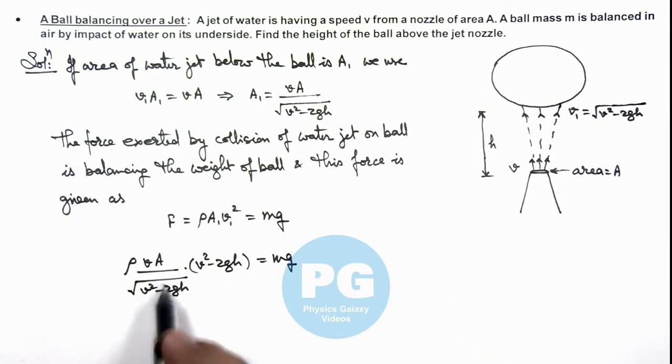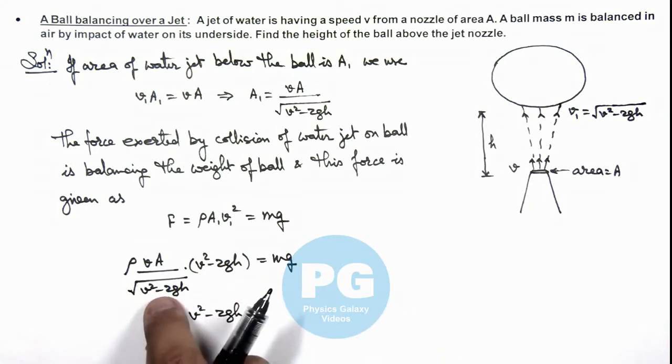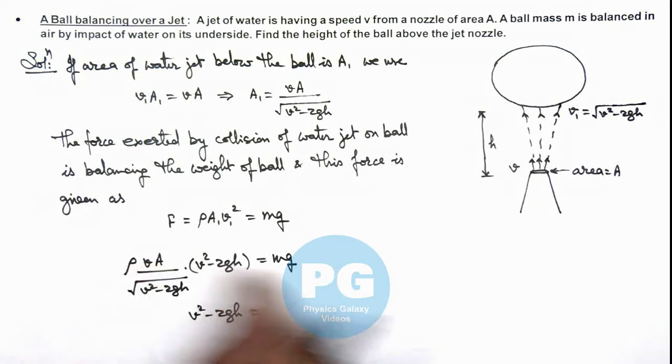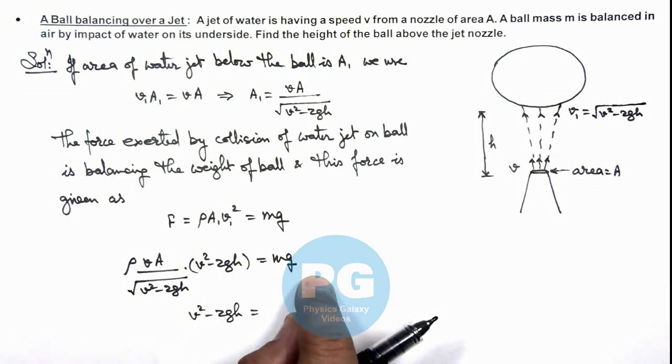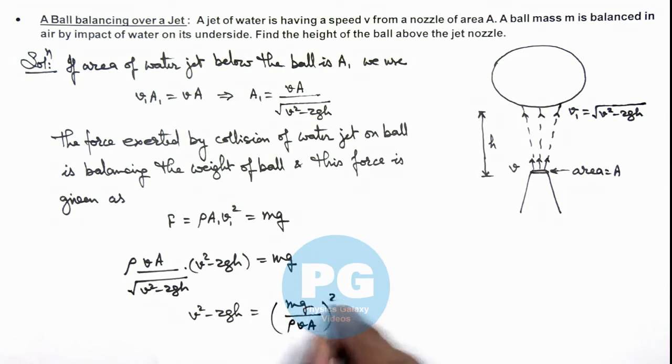Here we can see one root of v squared minus 2gh gets cancelled out, and we get v squared minus 2gh is equal to, here you can take this term on the other side, ρ v A and v squared it. Then this will give us a value: mg divided by ρ v A, whole squared.